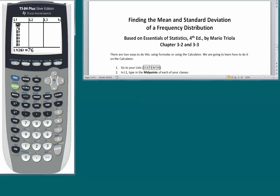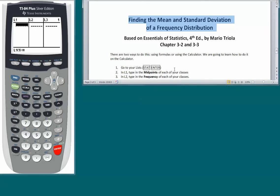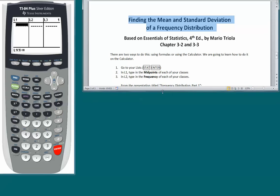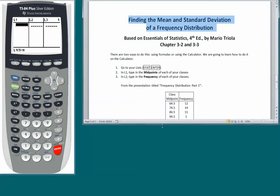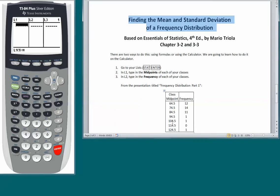We're going to hit CLEAR and ENTER, and that eliminates all the values from that list. So if we go back to our steps, in L1 we're going to type in the midpoints of each of our classes, and in L2 we're going to type in the frequency of each of our classes. All of these values come from the problem that we worked on in Part 1.